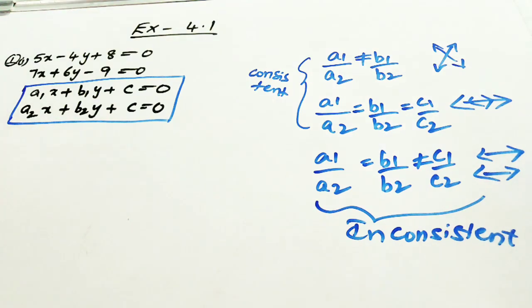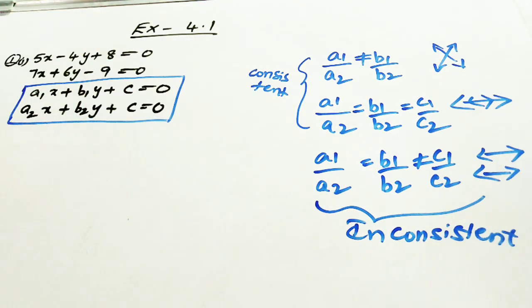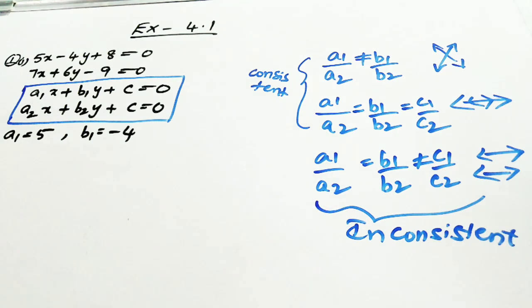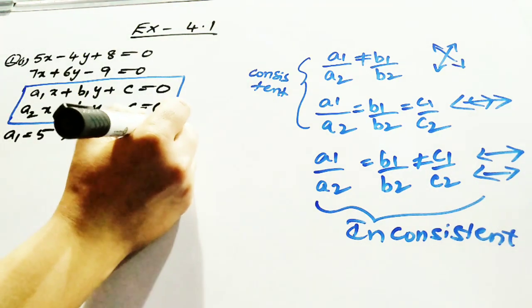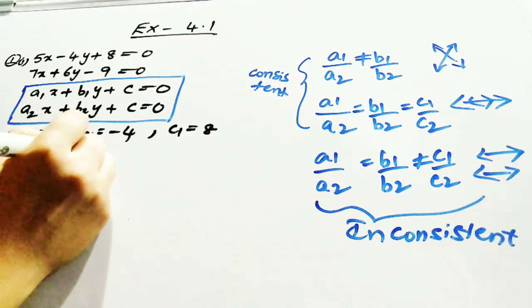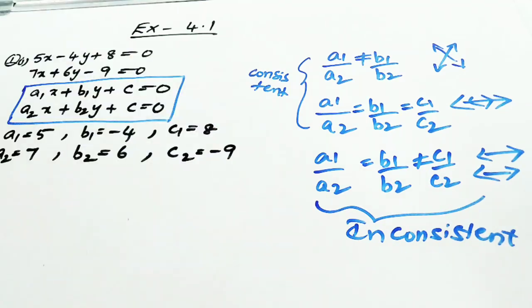After writing your equation, this equation is in this form only, so no need to convert it. After that, the next step is you have to find out the coefficient of the variables of your equation 1 and equation 2. What is your a1? a1 is equal to 5, b1 is equal to minus 4, you have to write minus 4, and c1 is equal to 8. What is your a2? a2 is 7, b2 is equal to 6, c2 is equal to minus 9.